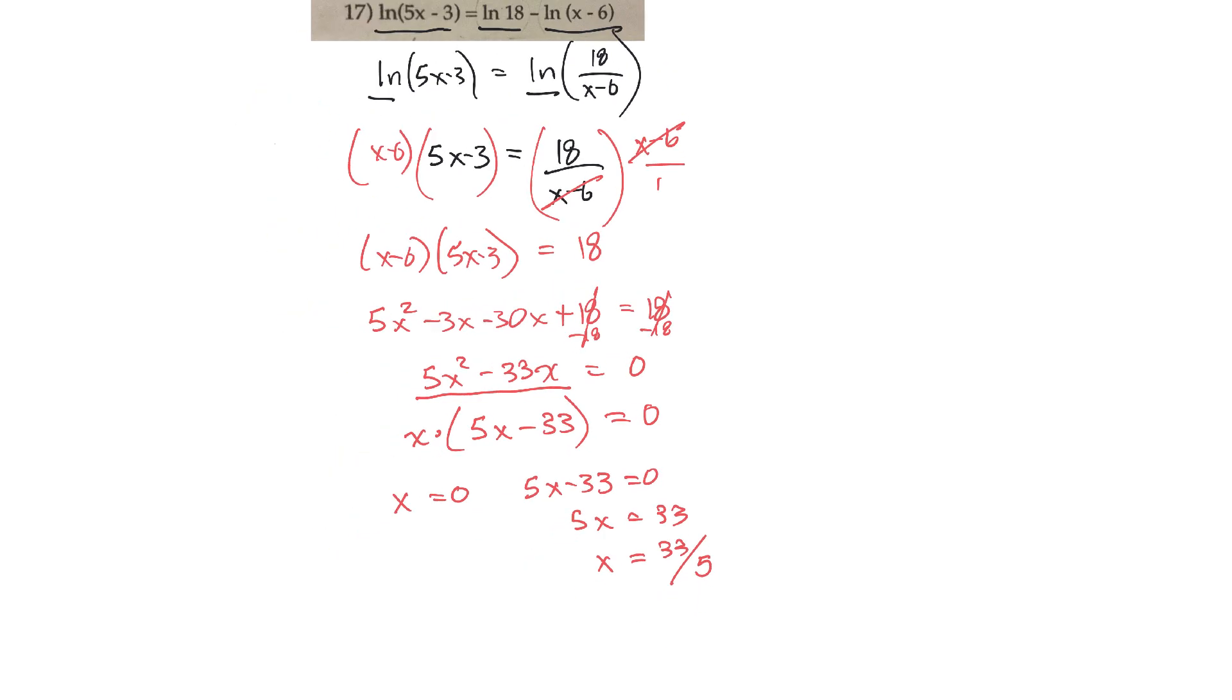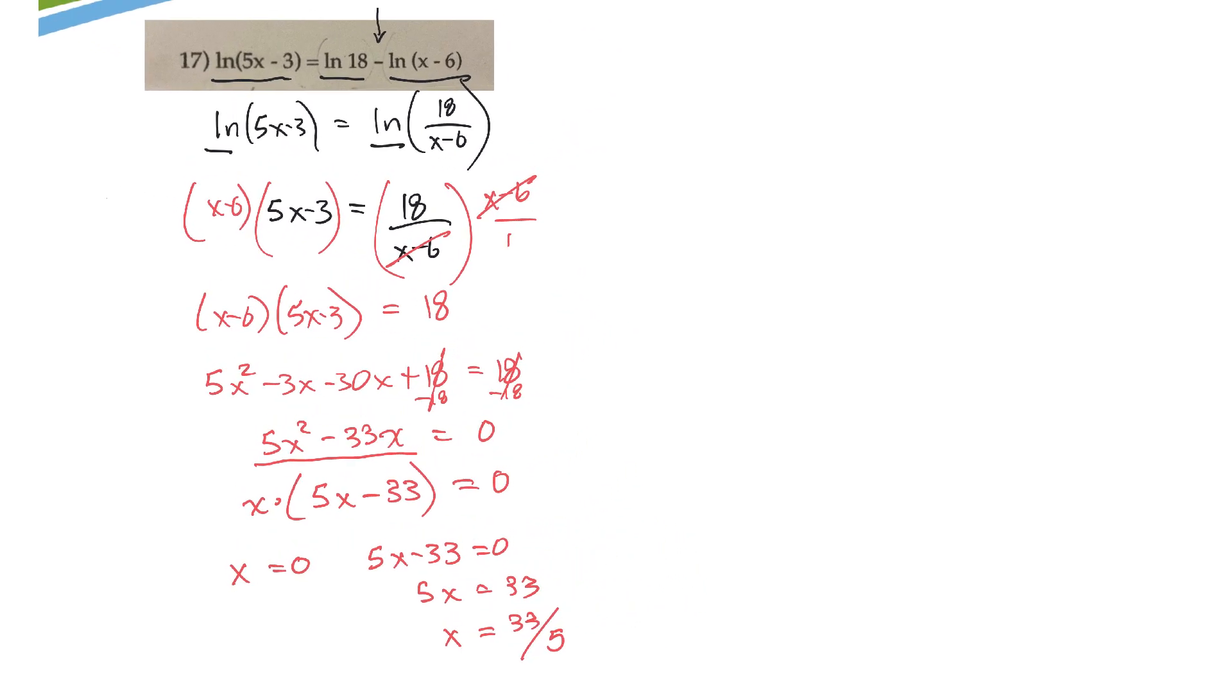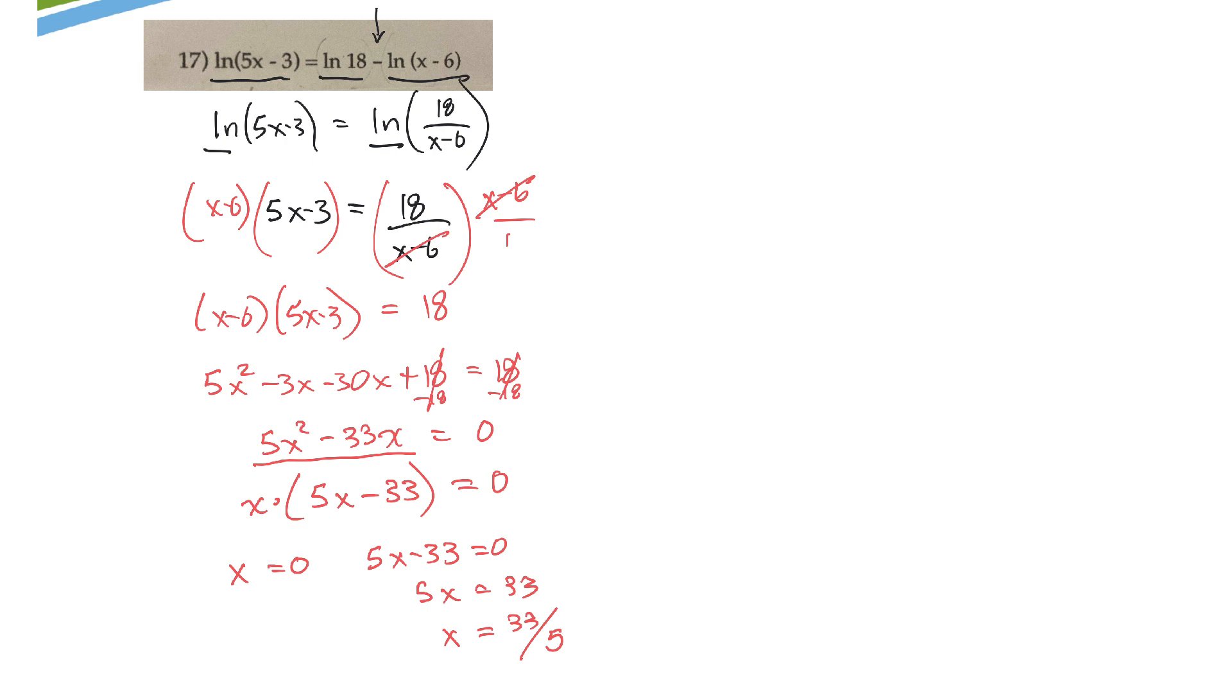Now I feel fairly good with that, but let's check when I plug things back in that they both work. I'm seeing troubles with this one. Because if I plug 0 in there, 5 times 0 is 0, minus 3 is negative 3. And I can't take the log or ln of a negative number. So that means x equals 0 can't work.